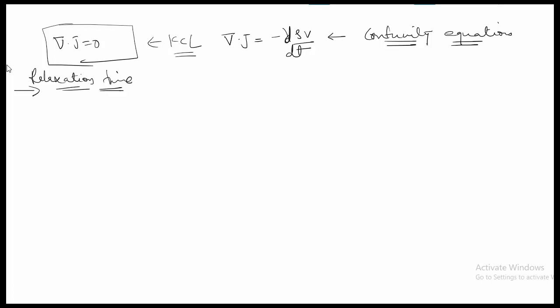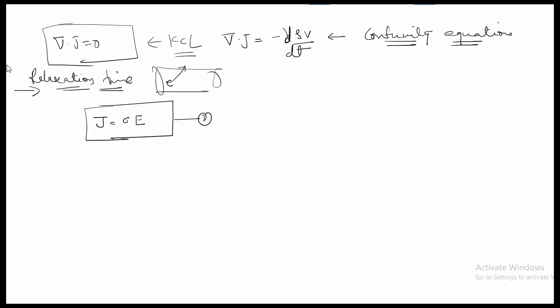The relaxation time is the time during which charges move from the interior of a volume to the surface. The current density J is given by sigma times E (conductivity times electric field). Substituting this into the continuity equation gives del dot (σE) equals minus d(ρv)/dt.